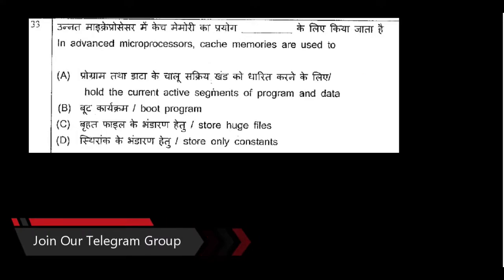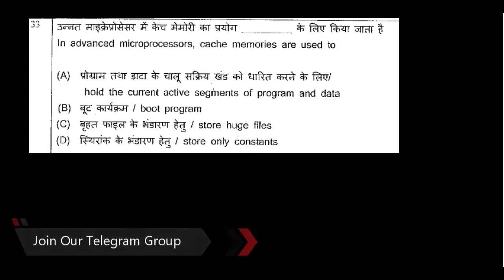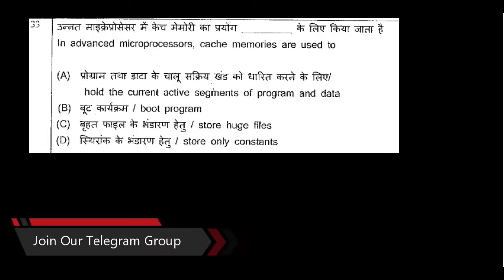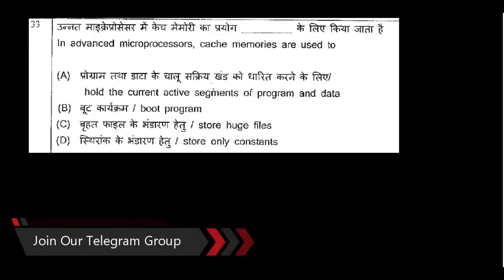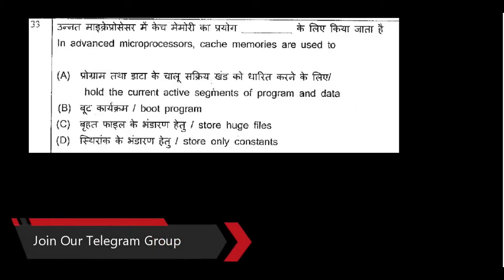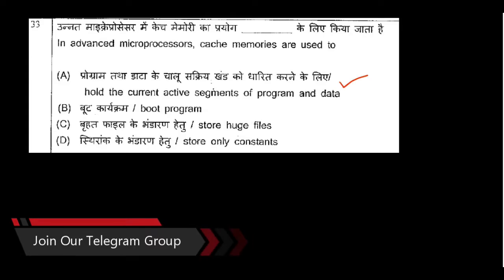Question number 33: In advanced microprocessors, cache memories are used. Some processors have built-in cache memory to increase speed. Cache memories are used to hold the current and active segments of program and data — that is the right answer.